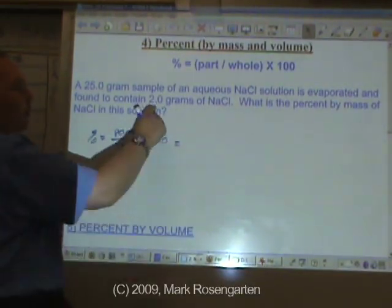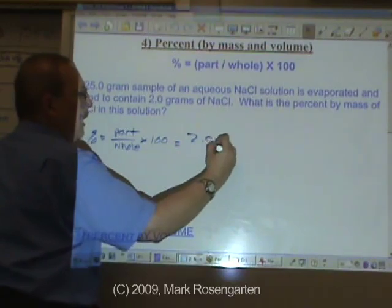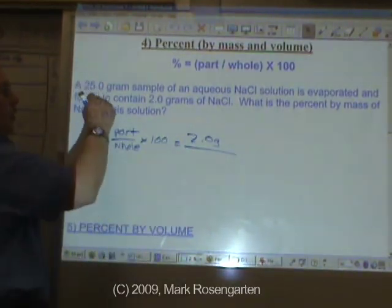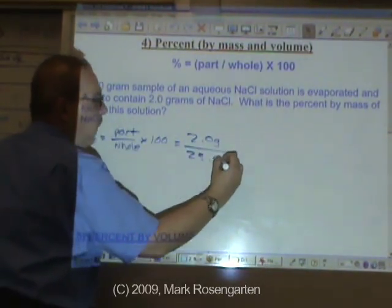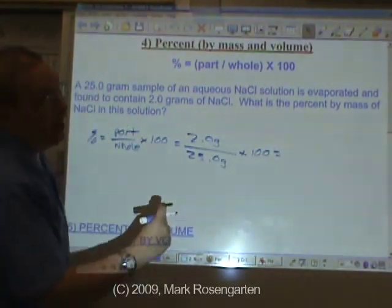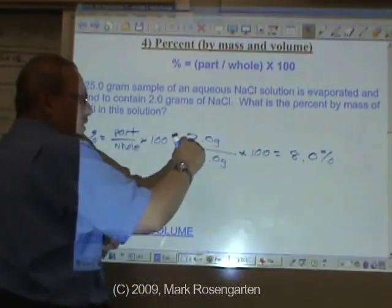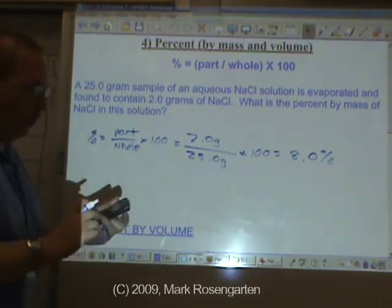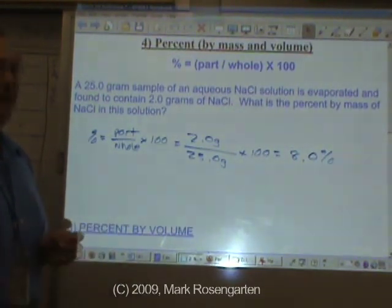Now the part was the salt, 2.0 grams. The whole was the solution, 25 grams, times a hundred, because it's percent. Two sig figs, two sig figs, eight point zero percent by mass.